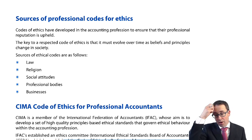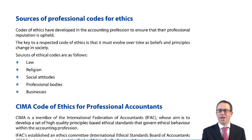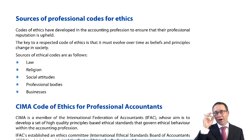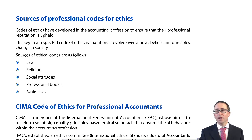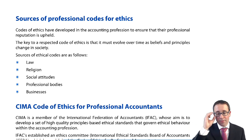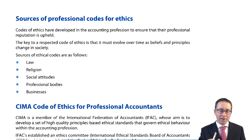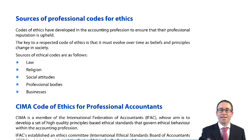We have a CIMA code of ethics. Where does that come from? Originally, it would have looked at early principles and come from religious ideas and beliefs, because religion was probably there at the start of time. It depends upon what you believe, but religious beliefs would have originally dictated ethics and how people behaved.